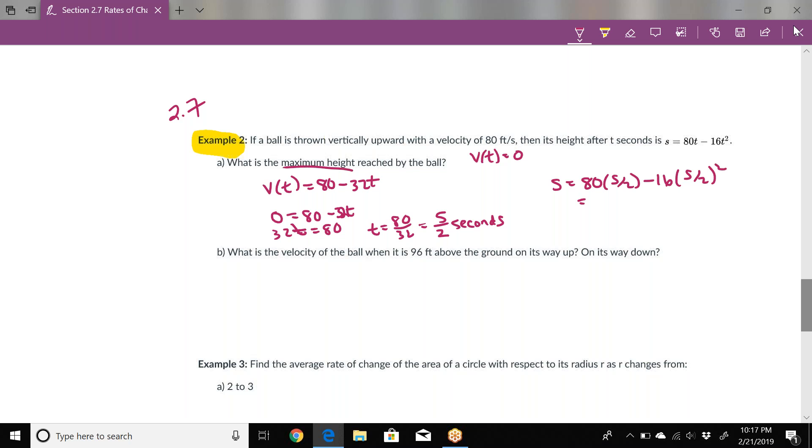That's 40 times 5, so 200, minus 16 times 25/4 if we square that fraction. This gives us 200 minus 4 times 25 after we reduce, which is 200 minus 100. So the max height this ball is going to reach is 100 feet.